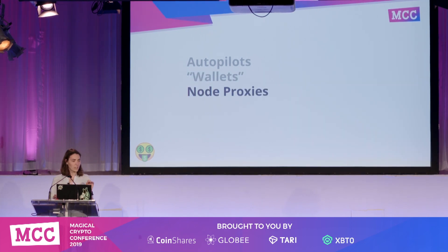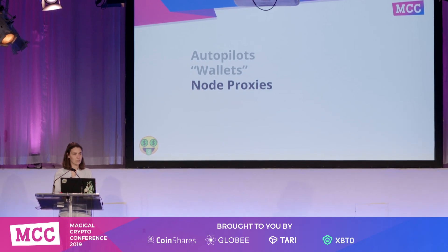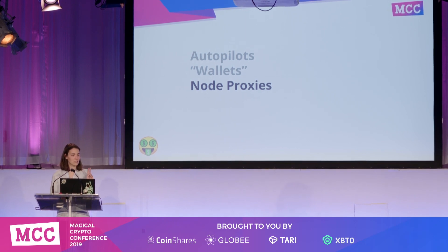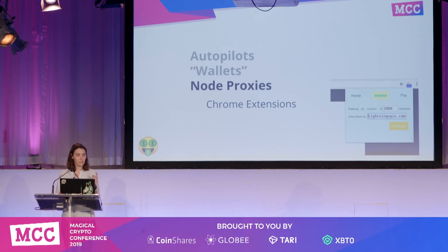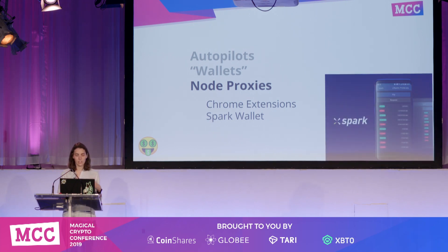There's also a class of projects I call node proxies. These assume you already have a separate node and you want to access it to send payments from a desktop or mobile client. You typically see these in two places: Chrome extensions — there's one for C-Lightning called Kilowatt (KWH) and another for LND that Will was talking about called Joule. Then there's the Spark wallet developed for C-Lightning, which has a mobile and desktop client that proxies to talk to your node and lets you spend money.